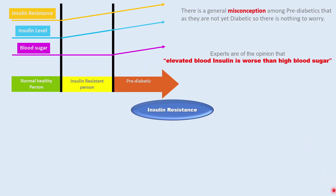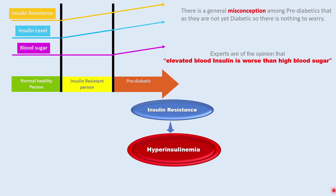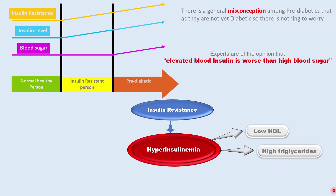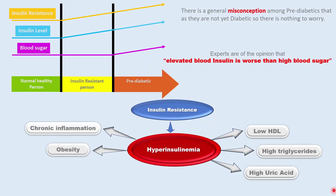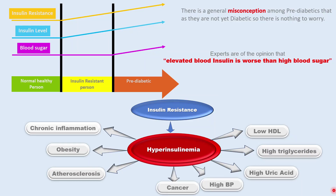Experts are of the opinion that elevated blood insulin is worse than high blood sugar. Elevated blood insulin is known as hyperinsulinemia. Hyperinsulinemia leads to low good cholesterol, high levels of triglycerides, high uric acid, chronic inflammation, obesity, narrowing of blood vessels or atherosclerosis that leads to high blood pressure, cancer, and of course type 2 diabetes.